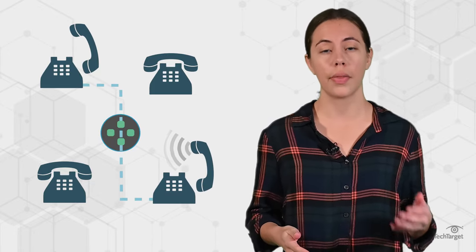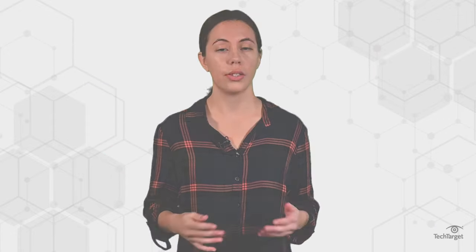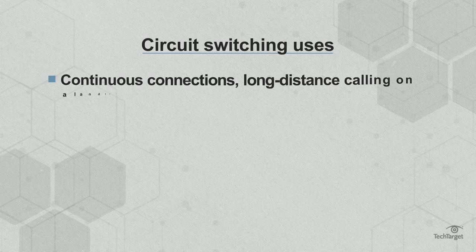Circuit-switching provides the basis for traditional telephone networks. When you use a landline to make a call to another landline, a physical path is created between the source and the destination, lasting only until the call is complete. Circuit-switching is used for continuous connections, like long-distance calling on a landline.